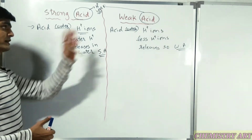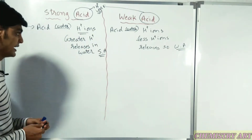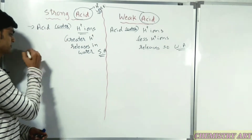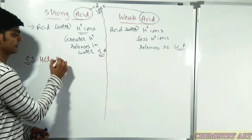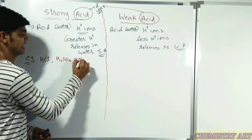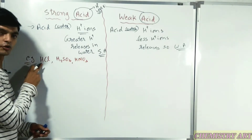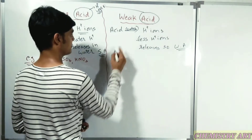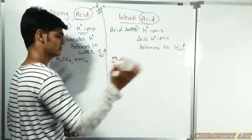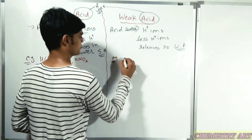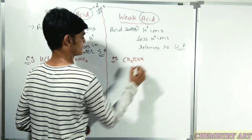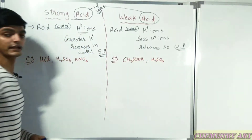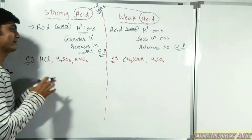Let me give examples of strong acids: HCl, H2SO4, and HNO3 - that is hydrochloric acid, sulfuric acid, and nitric acid. And for examples of weak acids, two examples are enough for your 10th standard: CH3COOH, which is acetic acid, and H2CO3, which is carbonic acid.